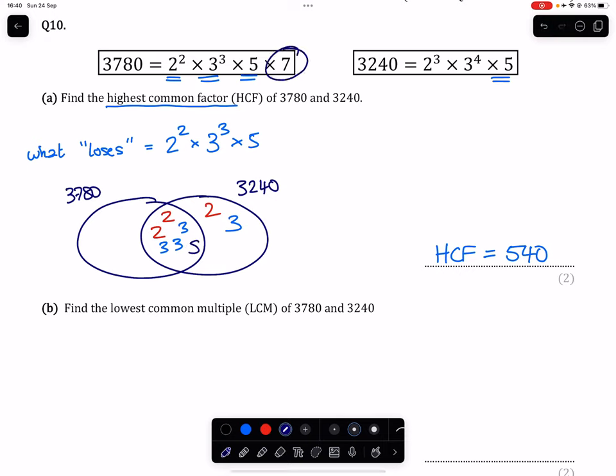And we have a 7 spare in 3,780. So, in order to find out our highest common factor, we then take all of the overlap multiplied together, which gives us exactly the same sum as that, giving us a highest common factor of 540.